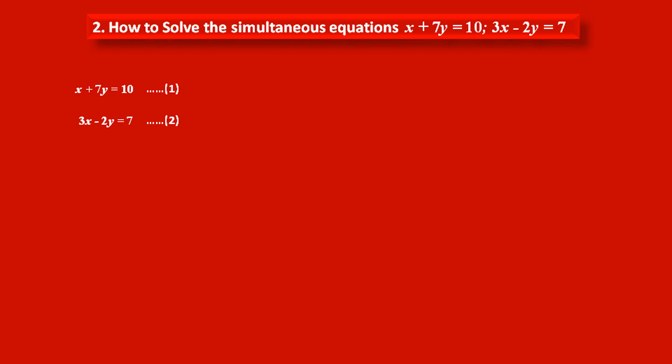Better than this, if we will make coefficients of x same. Because in equation 1, coefficient of x is 1 and in equation 2, it is 3. So we have to multiply only one equation, equation number 1 by 3, to make their coefficients same. So that we can easily subtract this equation to eliminate x and we will get value of y.